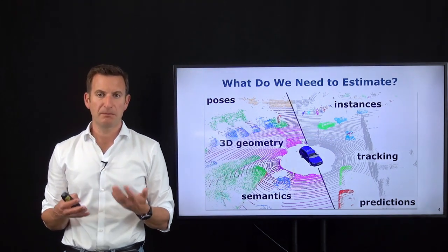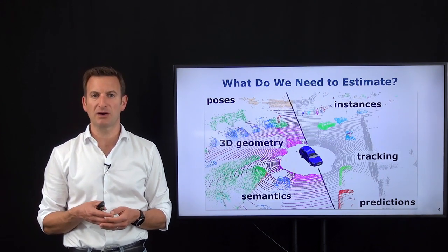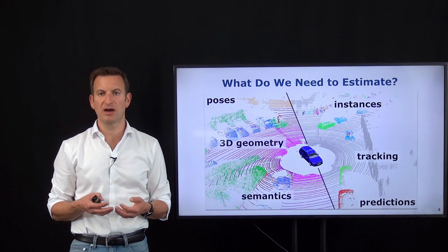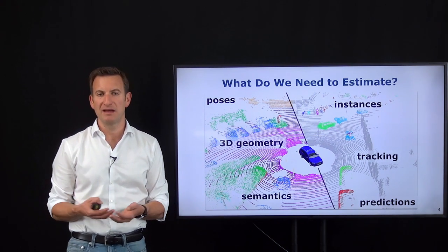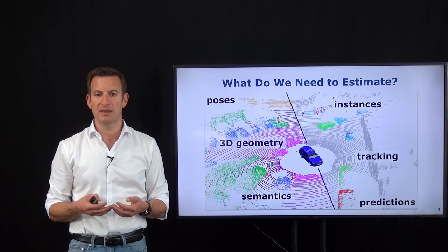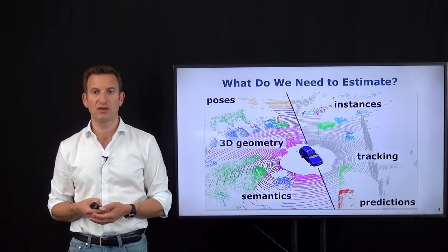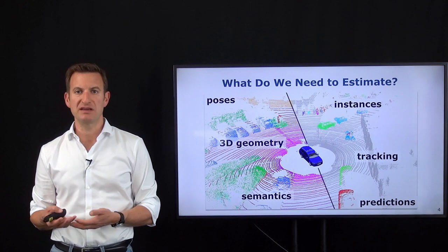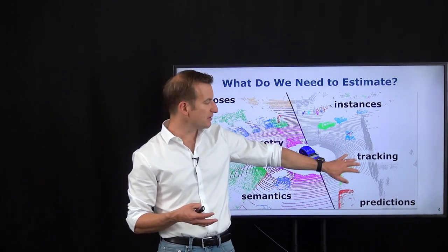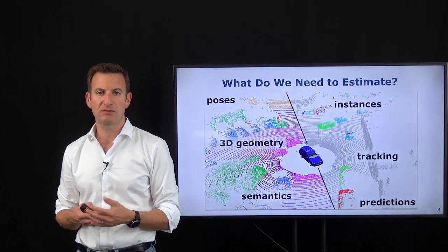We do not only need semantic information in the form of semantic segmentation — we also want to estimate instance information. Those green dots over here are car number one and those blue dots are car number two; these are two different cars, and the ability to distinguish them is important for tracking their motion. Two cars may move differently through the environment, so you want to get this instance information that allows tracking and predictions about what's going to happen in the future. Today we focus on pose, geometry, and semantic information, with an outlook to instance information.